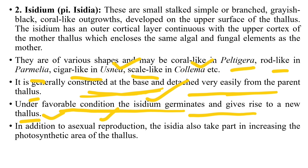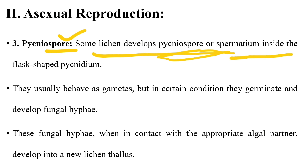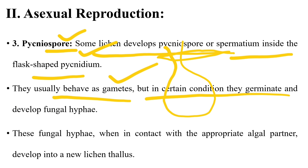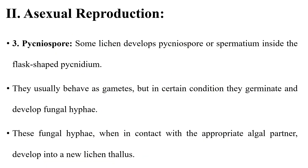Isidia also increase the photosynthetic area of the thallus. In asexual reproduction, some lichens develop pycnidiospores or spermatia inside flask-shaped pycnidia. These usually behave as gametes, but under certain conditions they germinate and develop fungal hyphae. This fungal hyphae, when in contact with an appropriate algal partner, develops into a new lichen thallus, since lichen cannot be produced without an algal partner.